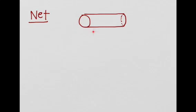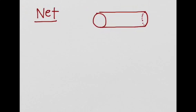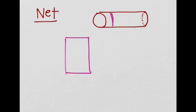So a net is basically when you flatten a three-dimensional object. For example, let's look at a cylinder. Basically what I'm going to do is I'm going to flatten it out. So I'm going to roll out this part, and when I roll out the cylinder part, I get a rectangle, right? Because if I wrap this sheet of paper into a circle, I get this lateral area of the cylinder.